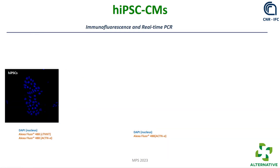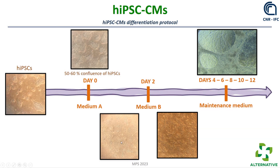Moving to the cell work: starting from pluripotent stem cells at 50–60% confluence, we begin differentiation by changing the medium to medium A and medium B, which are specific media for differentiation. Cells start to change shape from a packed configuration to a round configuration, then to a much more elongated configuration, and we maintain them for at least twelve days in maintenance media.